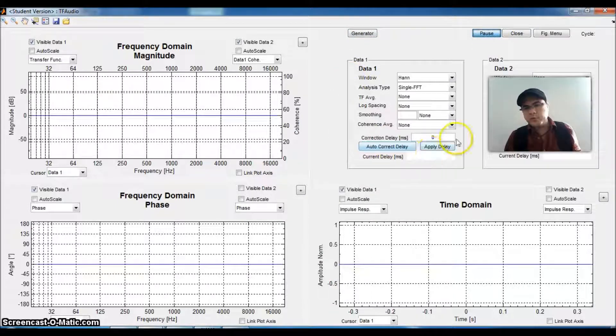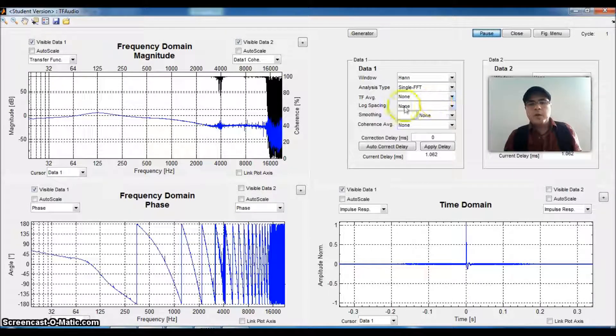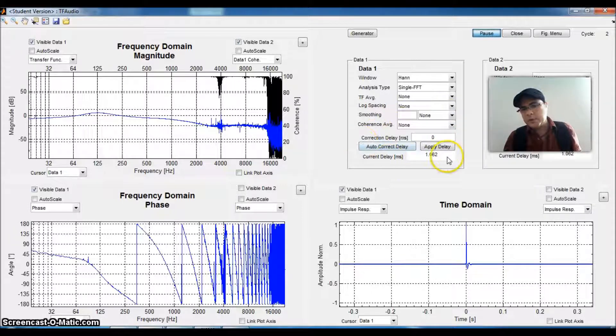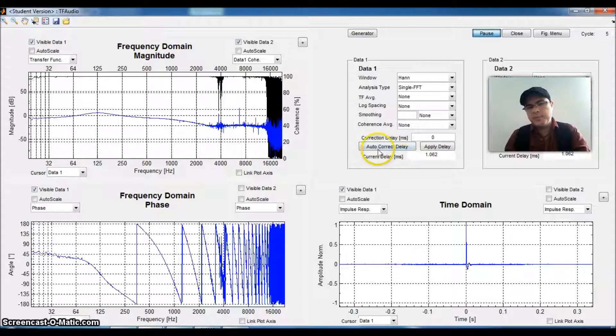Here is the control section. We can change what window we are using, we can take averages of measurements, we can apply some smoothing filters, and we have a delay section. The analyzer is telling us that the guitar effects unit introduces a delay of 1.06 milliseconds, and we can correct this delay.